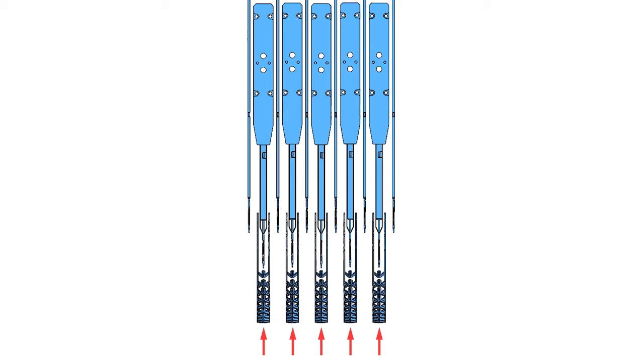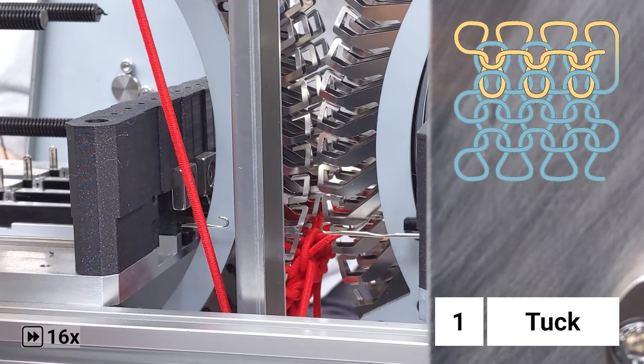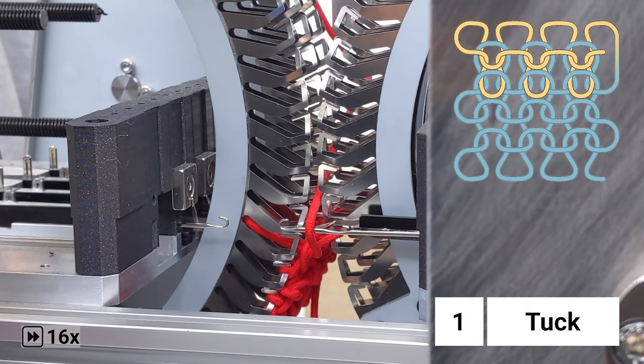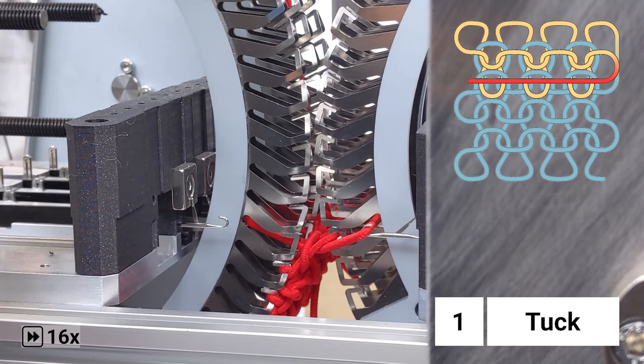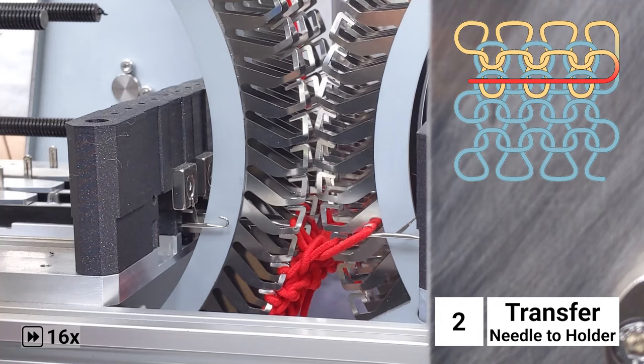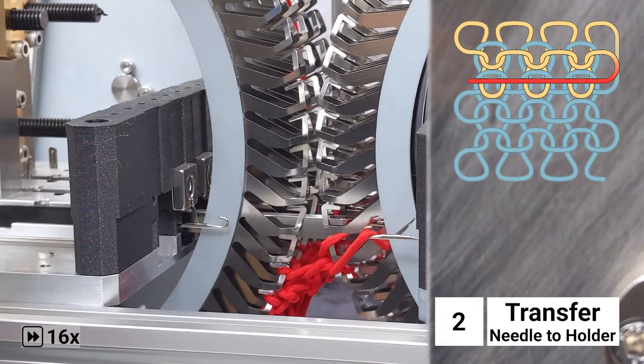Holders can change their state between Open and Closed. Here are basic operations to create a new row. Step 1: Tuck. Place a new span of yarn beneath the holder hooks using the retaining needles. Step 2: Transfer needle to holder. Move loops from the left needles to the right holders.